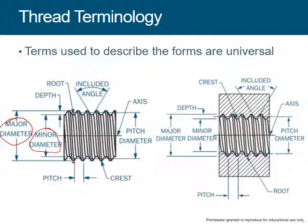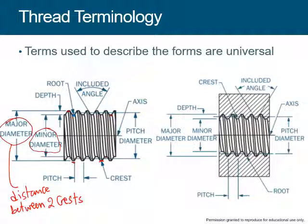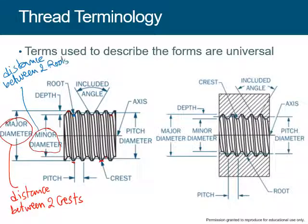If you look at the profile of any thread, there is a root, which is the bottom part — let me put the root in blue — and then there is a crest, let me put it in red, which is up here. So the major diameter is the distance between two crests, and the minor diameter would be the distance between two roots.